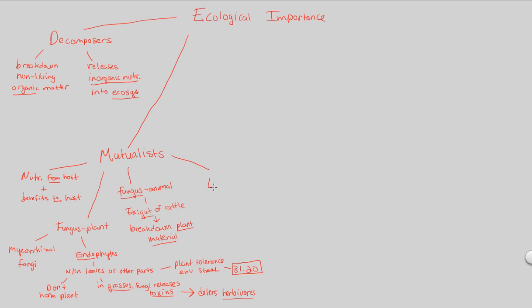And finally, last mutualistic relationship to understand are of the lichens. Lichens we talked about in our ascomycetes flowchart. Look at figure 31.22 to really drive home the point of lichens. I'll just reiterate that lichens are an ascomycete, they are that sac fungi, ascomycete.